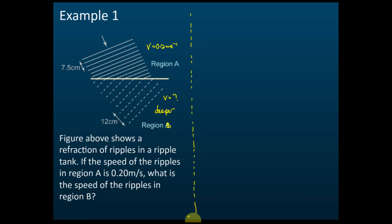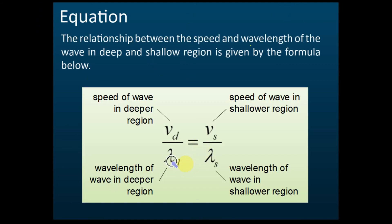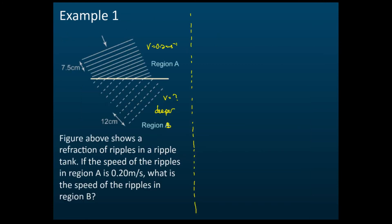Find the speed of the wave in region B, leaving the answer in cm per second. For these equations, you don't need to convert cm to meters, because the cm factors will cancel off. But if you're not sure whether you need to convert or not, then you should convert to be safe. In this case, you don't need to.